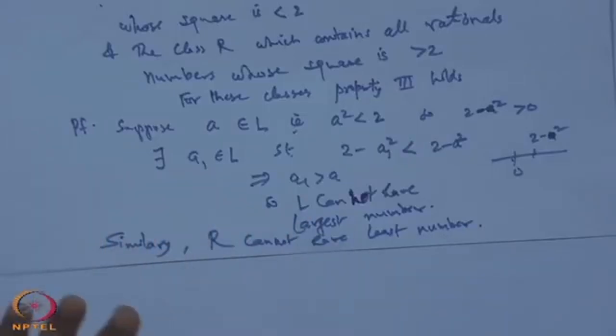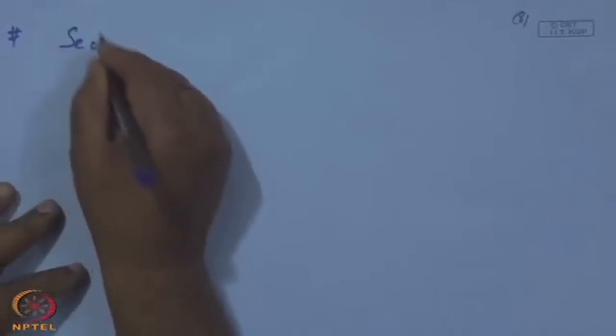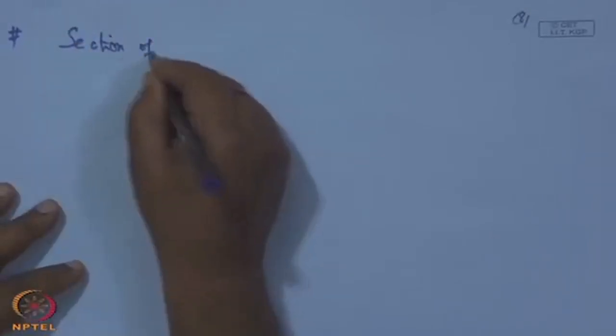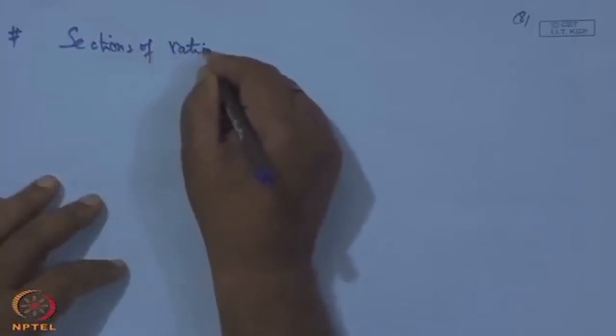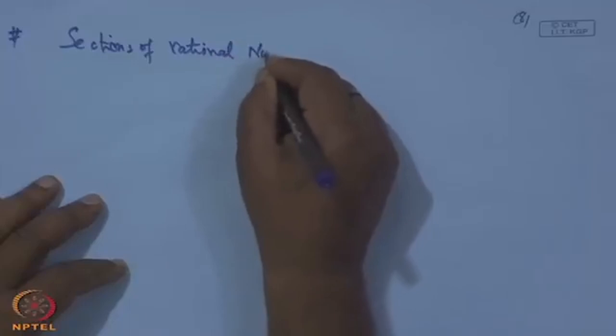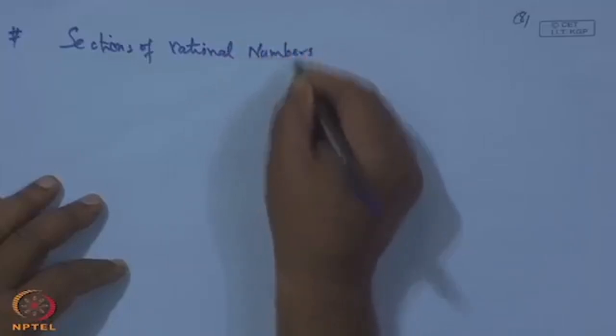Based on this discussion, we can now introduce the concept of cuts of rational points, also called sections. We introduce the sections of rational numbers.